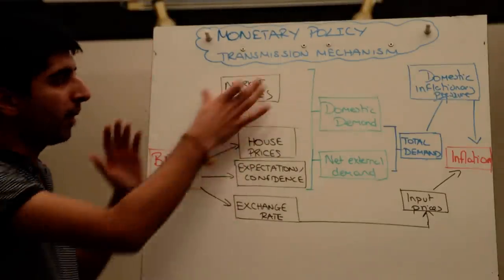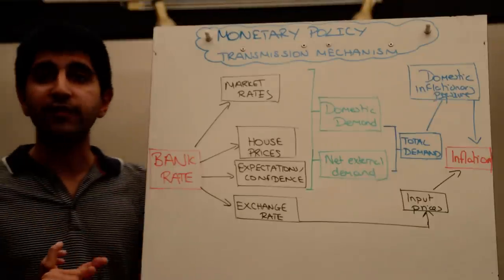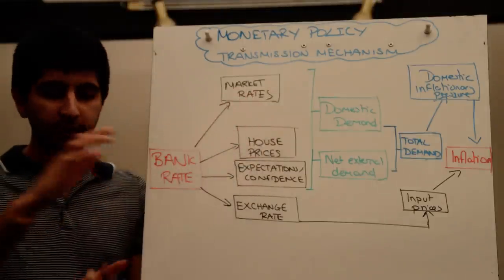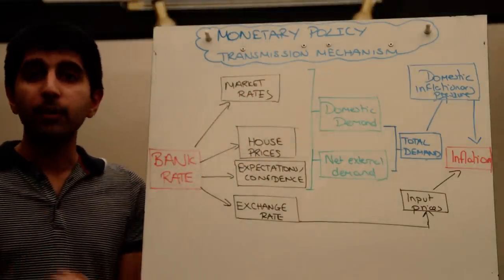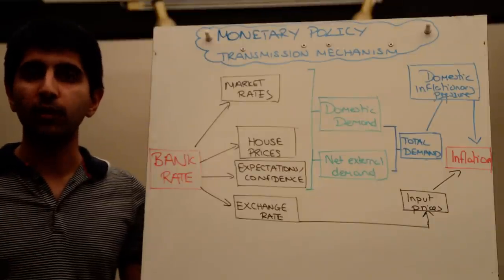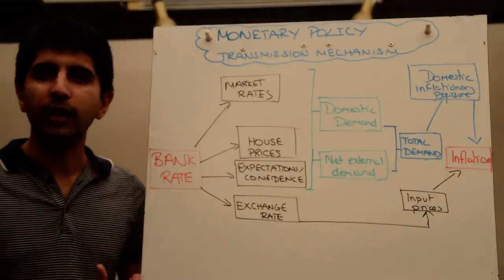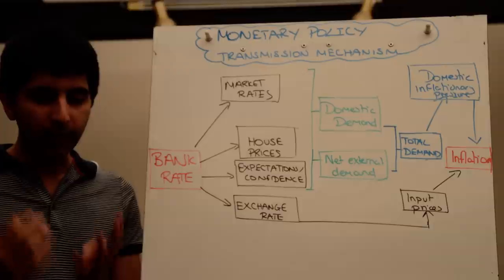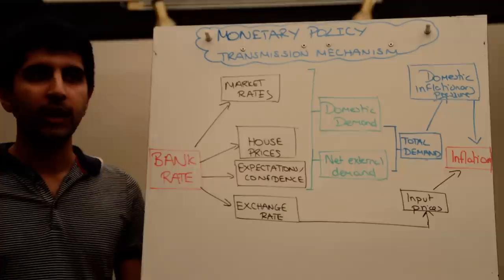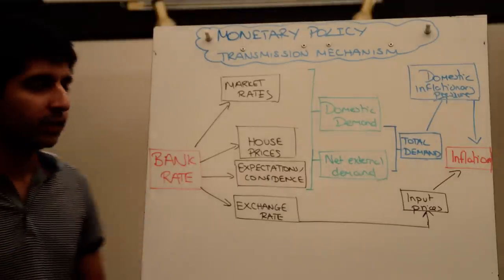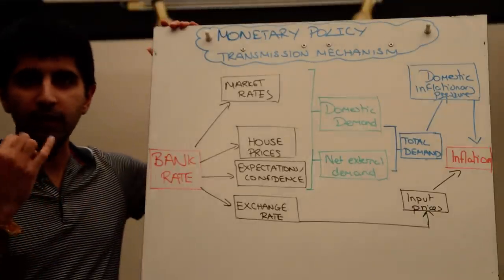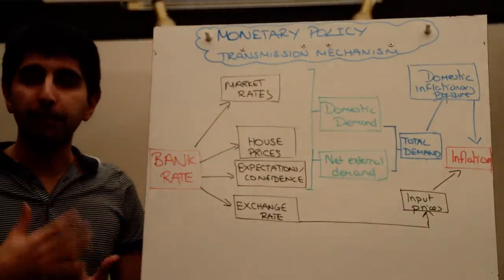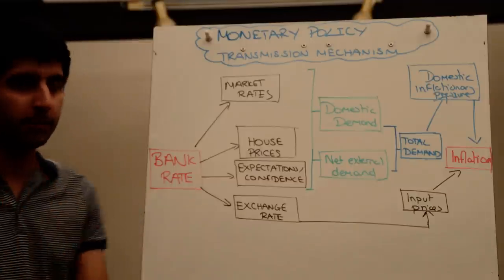If market rates follow the change in the bank rate, that is going to affect borrowers. If interest rates are cut and market rates are also cut, it becomes cheaper to borrow, so borrowers are happy. People with mortgages are happy because their interest repayments fall. People looking for a mortgage are happy because their monthly mortgage payments will be lower. It also affects savers — the rate of return they get on their savings will fall. Market rates are important, affecting borrowers, mortgage payers, prospective house buyers, savers, and businesses that want to borrow money to fund investment.